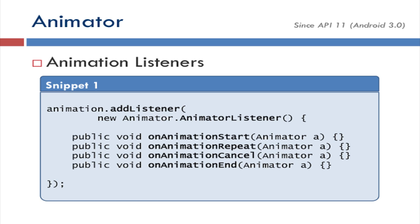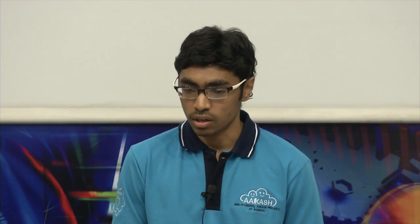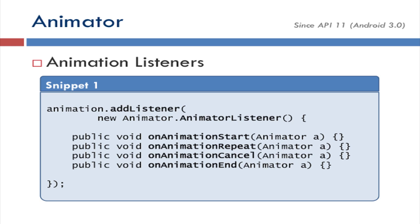The final thing is animation listeners. The animation class provides a set of listeners. We can specify an animation listener and override its four methods: onAnimationStart, onRepeat, onCancel, and onEnd. They get fired when the animation starts, repeats, is cancelled, or ends. For example, if we want to start another animation on end of the first animation, we can specify it in onAnimationEnd.